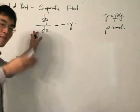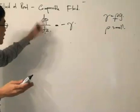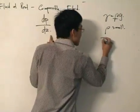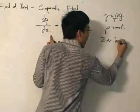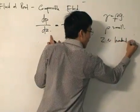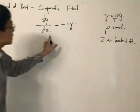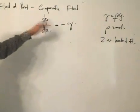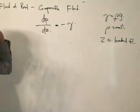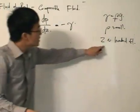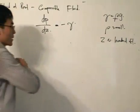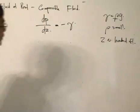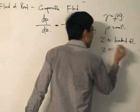We can neglect elevation changes or pressure changes due to elevation if the distance is in the realm of a few hundred feet. If the density is small, the specific weight is also small and the change in pressure will also be small. So in that case, we can use our previous equation.